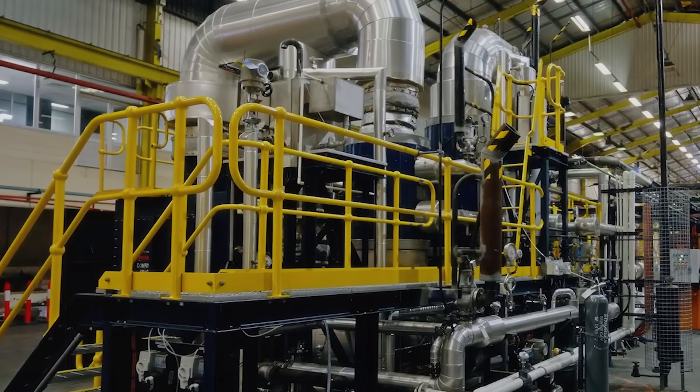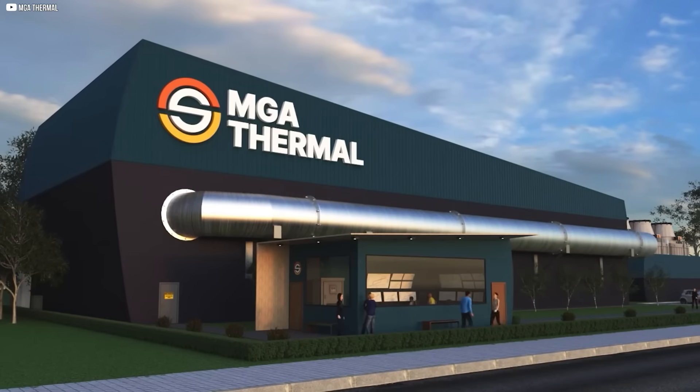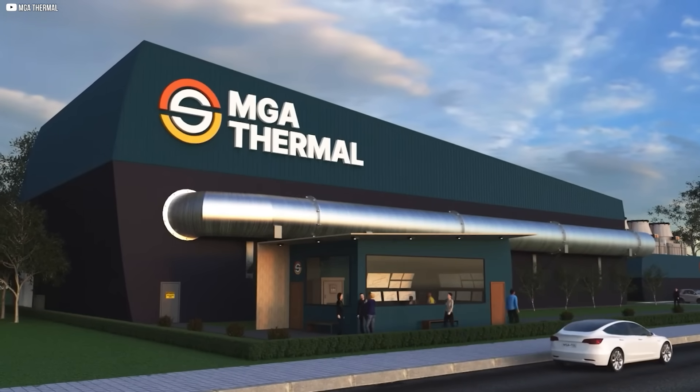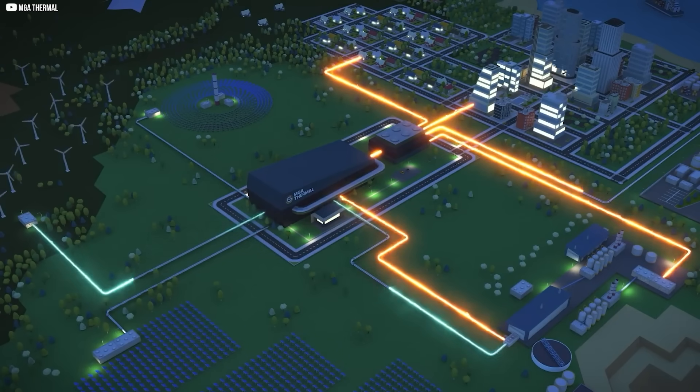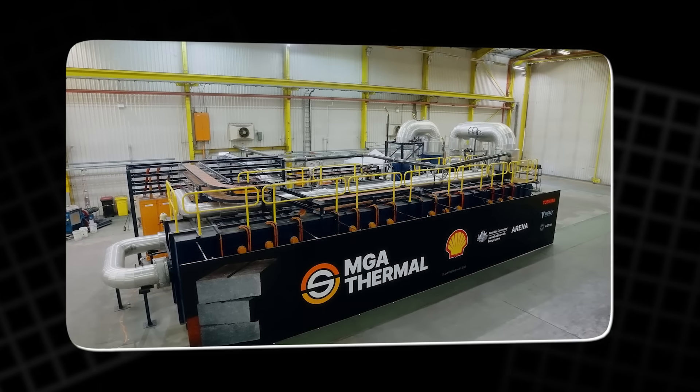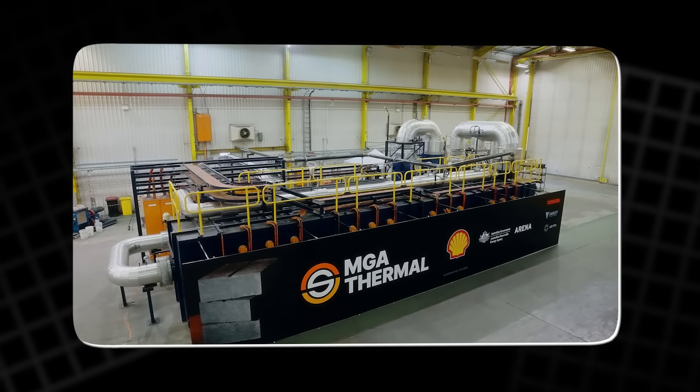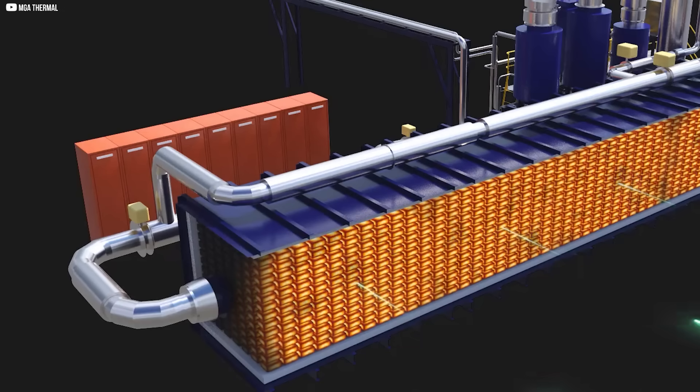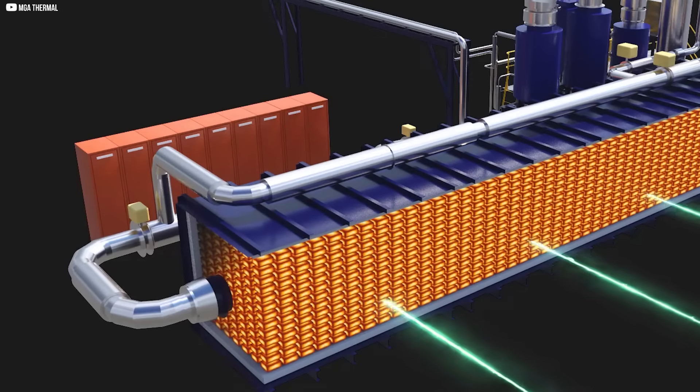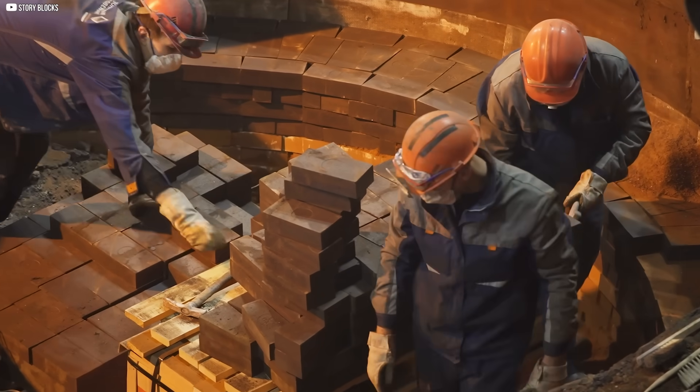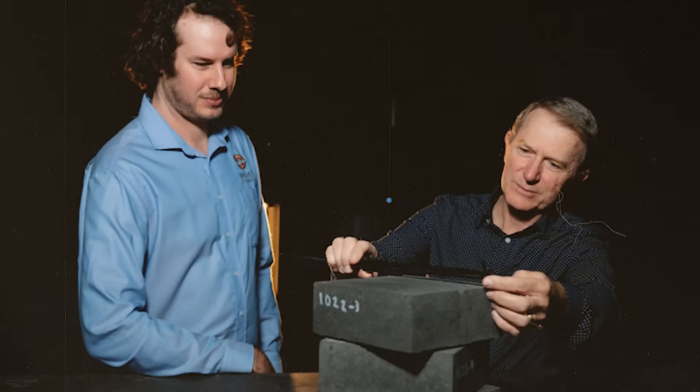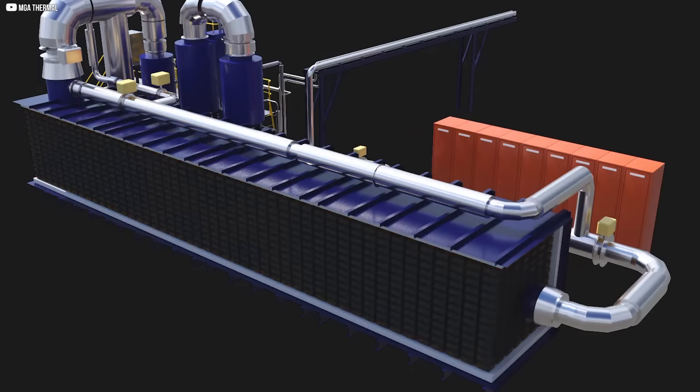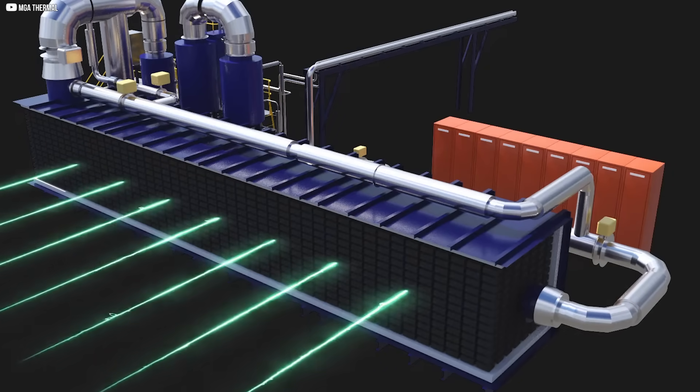The demo plant is only the beginning. Behind closed doors, MGA Thermal is working on something bigger. A 180-megawatt-hour facility, still early, still uncertain, but in motion. At a minerals processing site, they've already helped reduce annual steam demand by 13%, simply by turning heat on and off when it's needed. That kind of control matters. The road ahead is slow, but steady. There will be setbacks. There will be doubt. But for the first time, there's also belief.